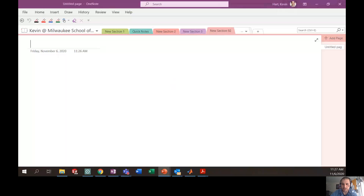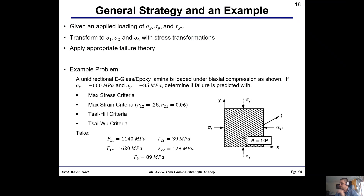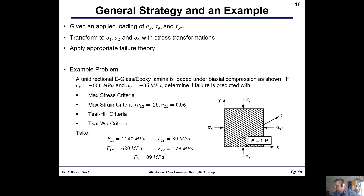I'll share my screen here — you'll see the white pad — and I'm going to bring up the problem we're going to work on. This is the very last slide of the unidirectional thin laminate failure theory notes. We have a unidirectional e-glass epoxy lamina loaded under biaxial compression as shown, with sigma x and sigma y bearing down on this thin unidirectional lamina.